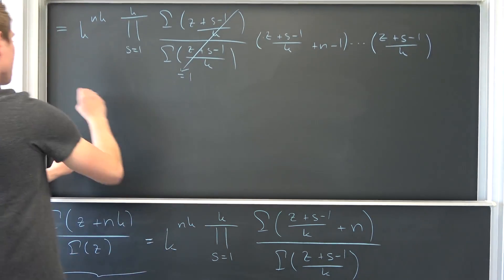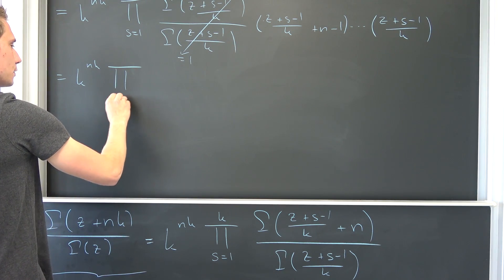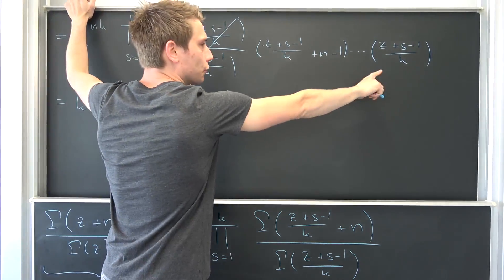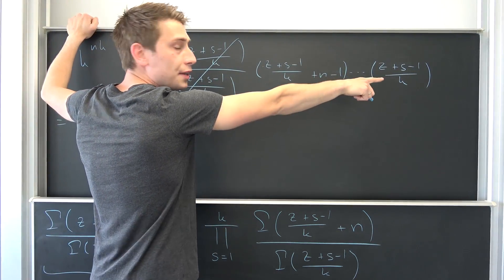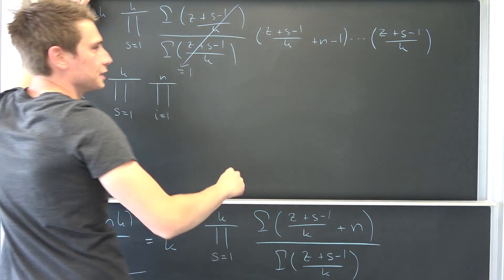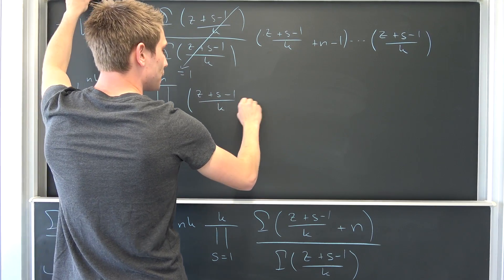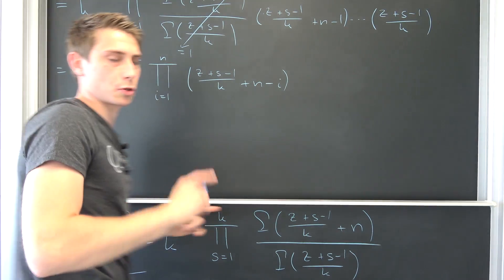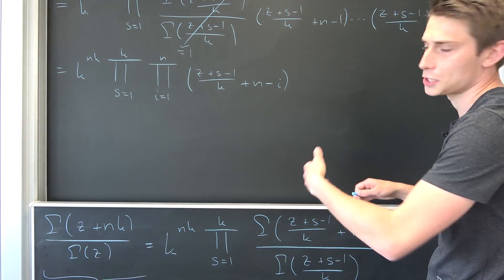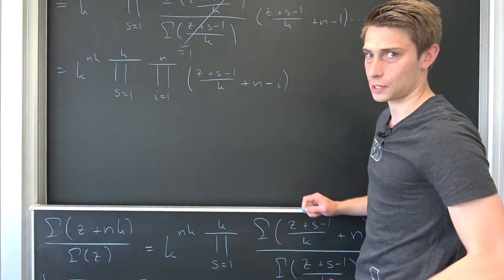This thing right here is going to cancel out to 1, and we are going to get k to the n times k. We have a product from s equal 1 to k, and now we have a new inner product from i equal 1 to n of z plus s minus 1 over k plus n minus i. We can actually bring this k to the n times k power completely to the inside. So if we take a look at a simple example: the product from i equal 1 to 3 of 2 plus i — basically we can factor out a 2 from each term.